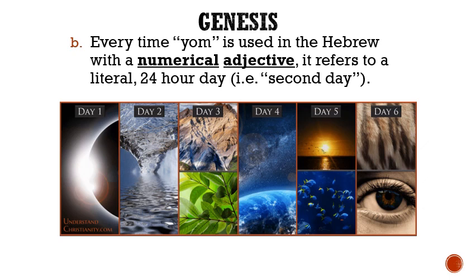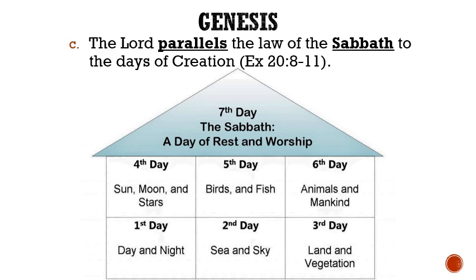To further explain that, the numerical adjective — first, second, third, and so on — before the word day refers to a literal 24-hour period of time. Thirdly, the Lord parallels the law of the Sabbath to the days of creation in Exodus 20, verses 8–11. If these days were just long periods of time, it would not make sense for the Lord to have established that guideline. If the Lord worked for six long periods of time or millions of years and rested for one long period of time, it would not make sense to tell us to model our rest after His. Moses told the people to work for six literal days and then rest for one literal 24-hour period.